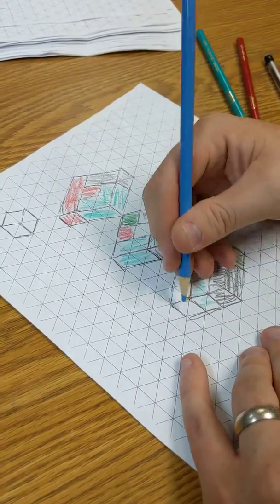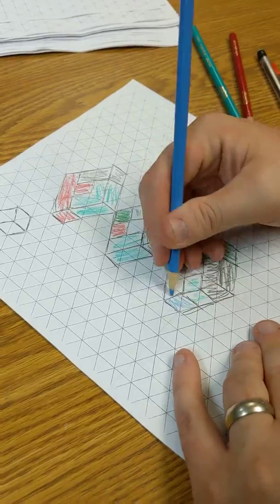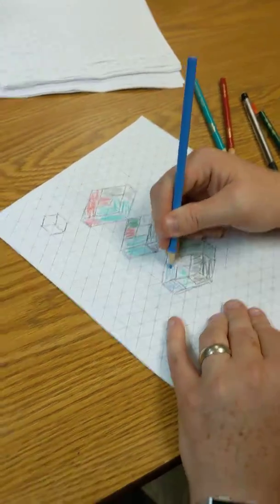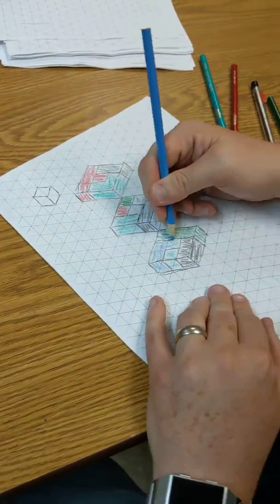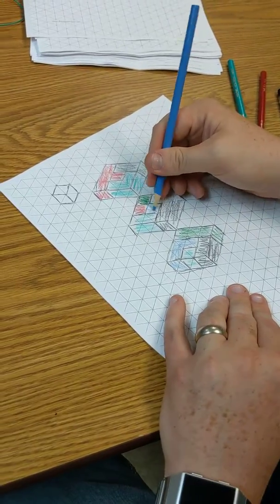And then my last piece has to be this piece here. And you really want four or five pieces. Five is kind of the sweet spot for pieces.